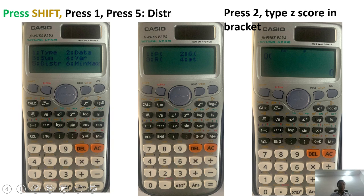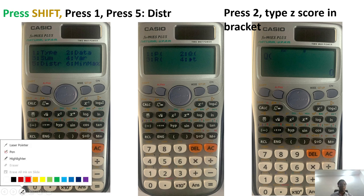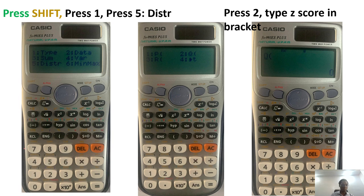So to now generate the proportion of the distribution that we're interested in, we will press the shift button. After pressing the shift button, we can press 1. First shift, then 1, because if you press shift you will see STAT here representing 1. So if you press shift and 1, it gives you this, and then you can now select 5, which is for distribution.